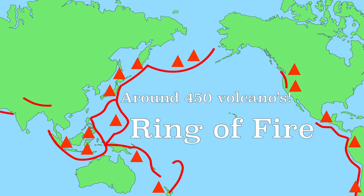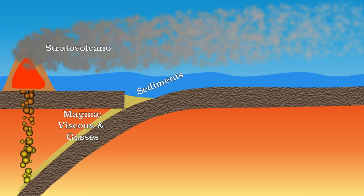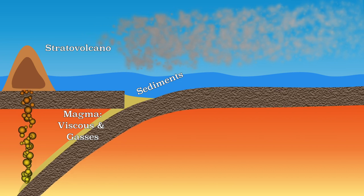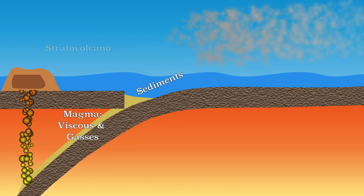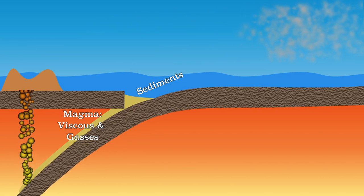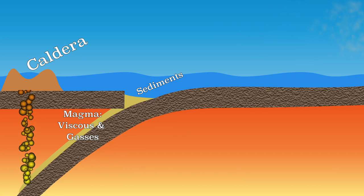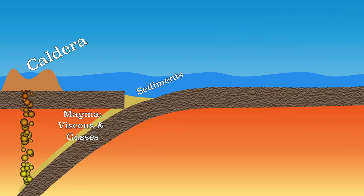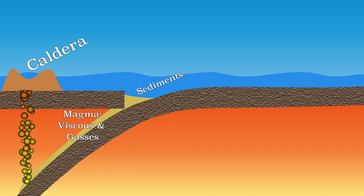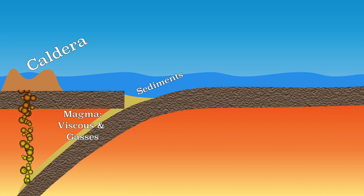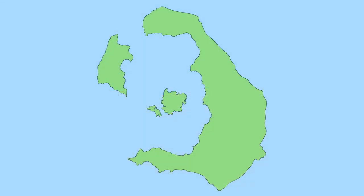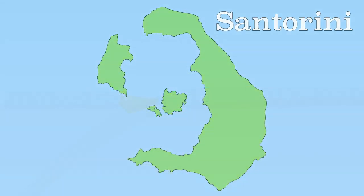There is a ring of stratovolcanoes around the Pacific Ocean. When a stratovolcano has been emptied, the steep slopes lose the material they could lean on because it has been emitted, allowing them to collapse. Such a collapsed volcano is called a caldera. Sometimes water collects in the caldera, creating a lake. Sometimes the caldera lies in the sea, creating a circular island. The Greek island of Santorini is an example of this.